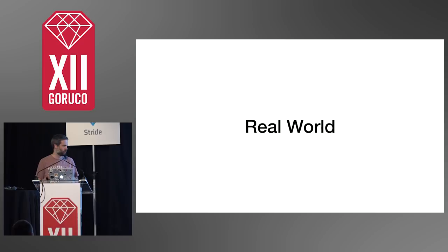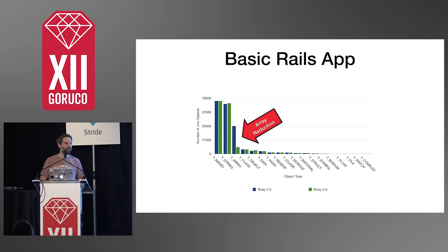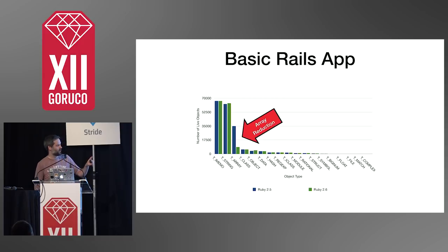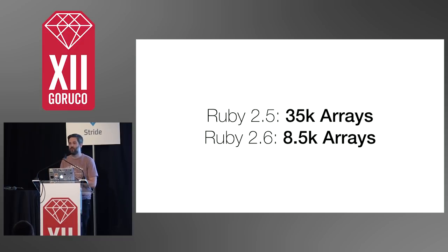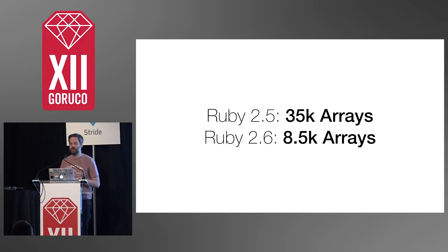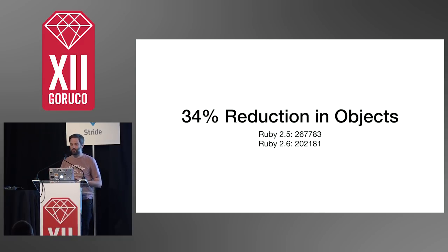Real-world impact: here's a basic Rails application. Along the bottom are the different types of objects allocated when you boot the application. Green is Ruby 2.6, blue is Ruby 2.5. You can see a reduction in the number of arrays allocated when you boot your Rails application. In Ruby 2.5, we allocate about 35,000 arrays. Ruby 2.6 is down to 8,500. Overall, this is a 34% reduction in the number of objects made at boot.